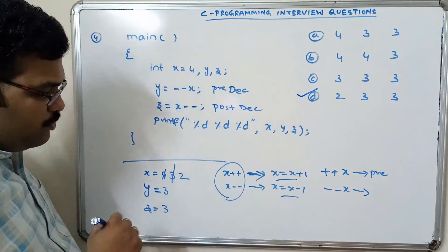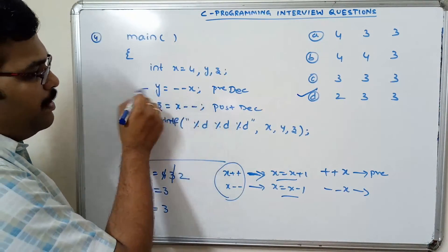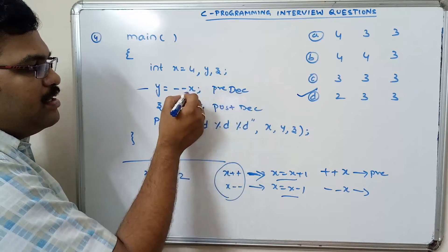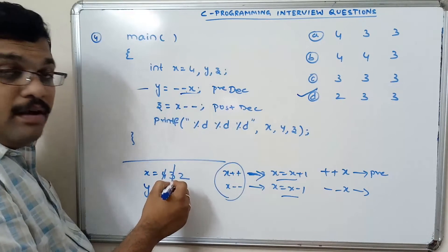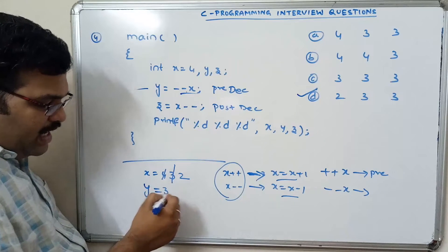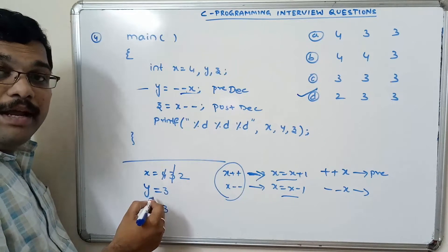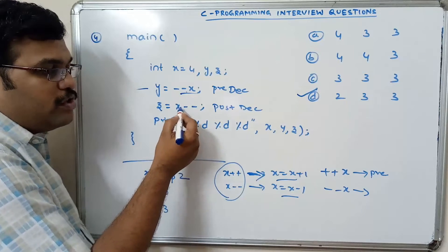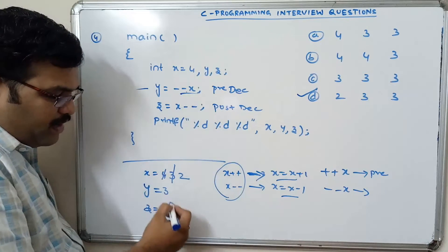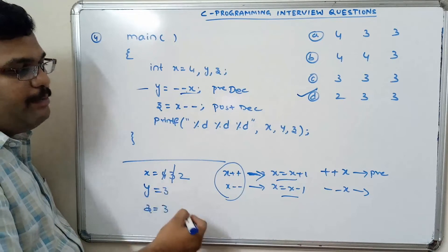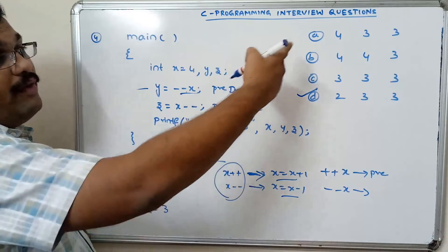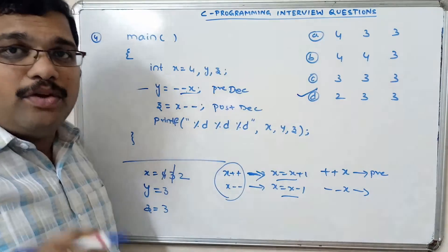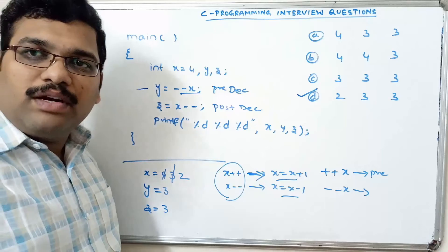So the answer is x=2, y=3, z=3. In the first step y = --x is pre-decrement so x is decremented to 3 and assigned to y. In the next step z = x-- is post-decrement so 3 is first assigned to z and then x is decremented to 2. Hope you understood this one. Let us go to the next question.